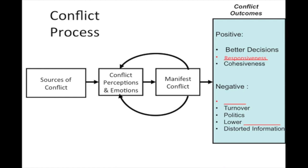At the bottom of the blue box, we have negative conflict outcomes. These are sometimes called socio-emotional, or alternatively referred to as affective — A-F-F-E-C-T-I-V-E — and also known as dysfunctional conflict. So we have four synonyms for bad sorts of conflict outcomes: negative, socio-emotional, affective, and dysfunctional. Some of these outcomes include the diversion of energy and resources, which can weaken the process and cause stress. This can also increase turnover, and organizational politics can rear their ugly head whenever a negative conflict outcome is present.